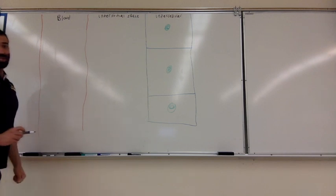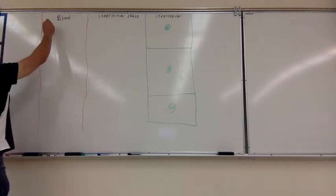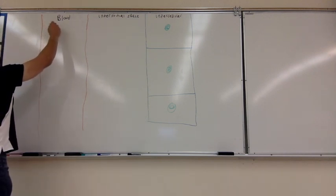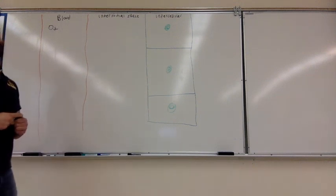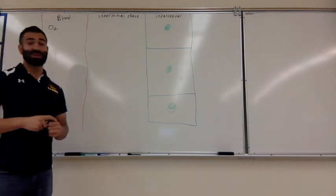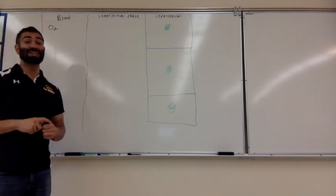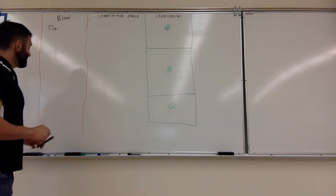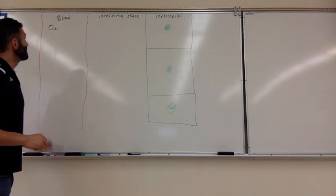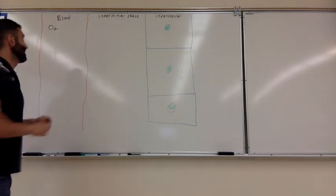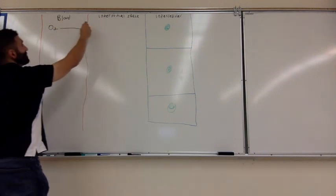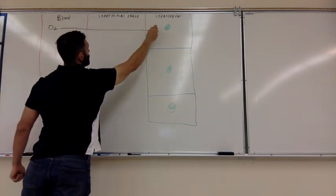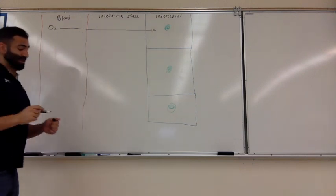The first thing is going to be oxygen. Oxygen, or O2, is carried through the blood. We'll talk about this later in the semester — it is carried by a type of protein called hemoglobin. Oxygen is very important because it needs to go to our cells, traveling through the blood, through the interstitial space, and into the intracellular environment.